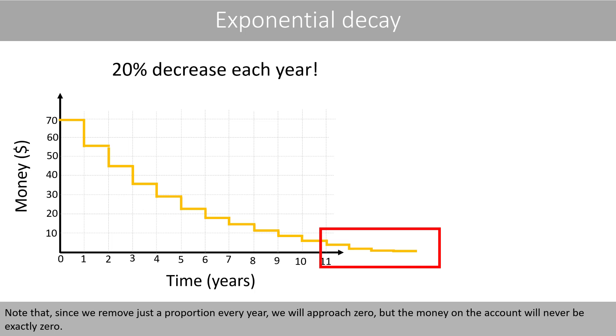Note that, since we remove just the proportion every year, we will approach zero, but the money on the account will never be exactly zero.